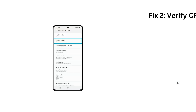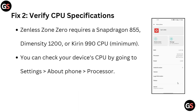Now move to Fix 2 and verify the CPU specification. Zenless Zone Zero requires a Snapdragon 855, Dimensity 1200, or Kirin 990 CPU as the minimum. You can check your device CPU by going to Settings and then About Phone and then Processor.